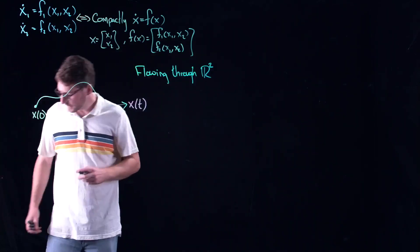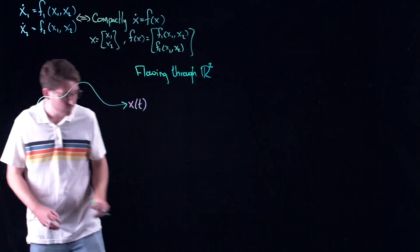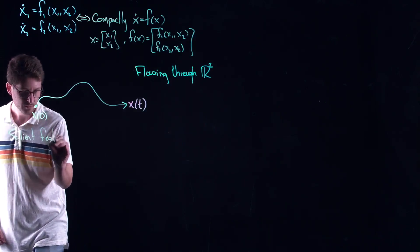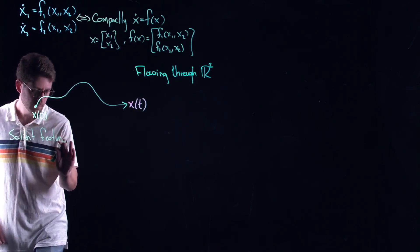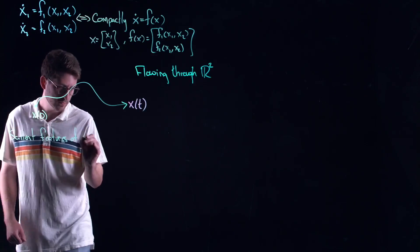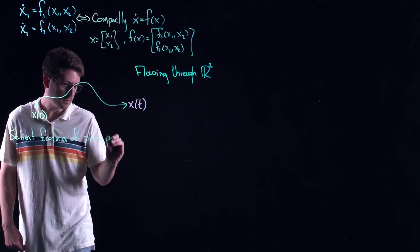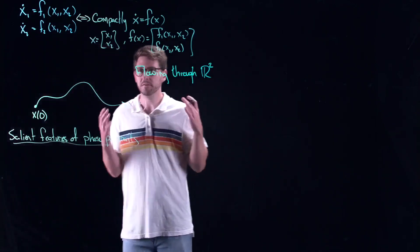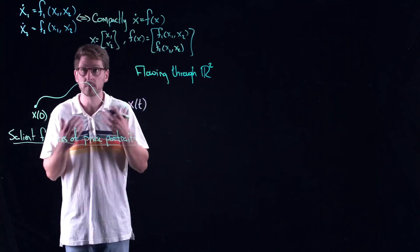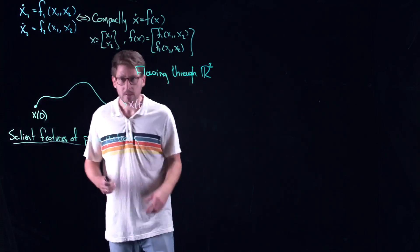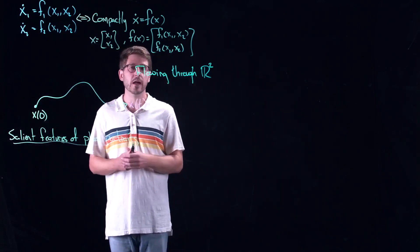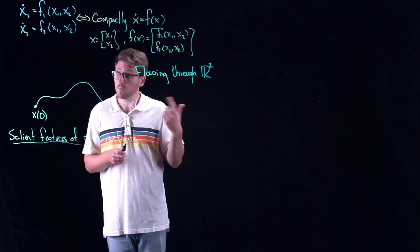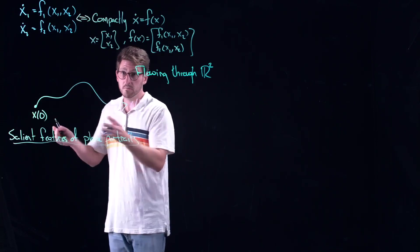We interpreted dynamical systems in one dimension as sort of a particle moving along a line. In this case, we should interpret these things as a particle that is flowing through the two dimensional plane, flowing through R2.